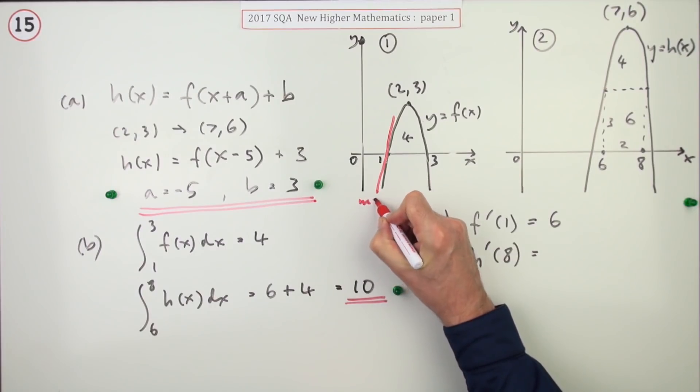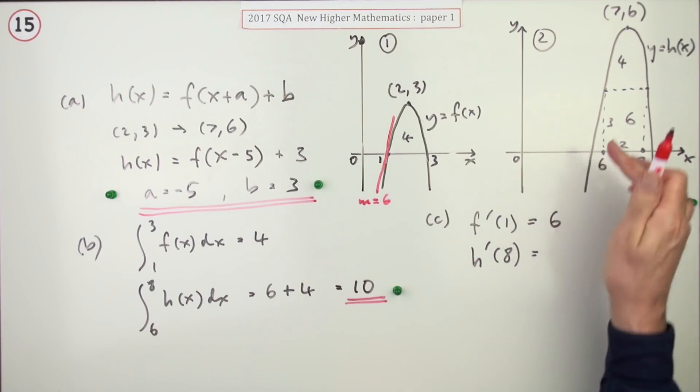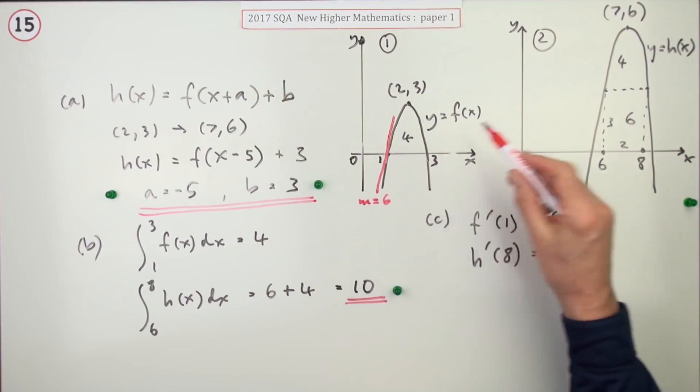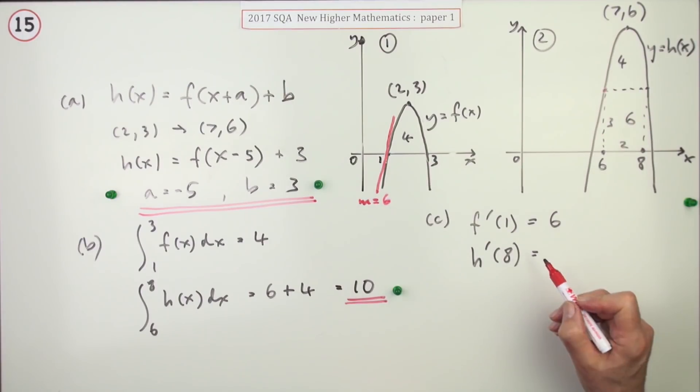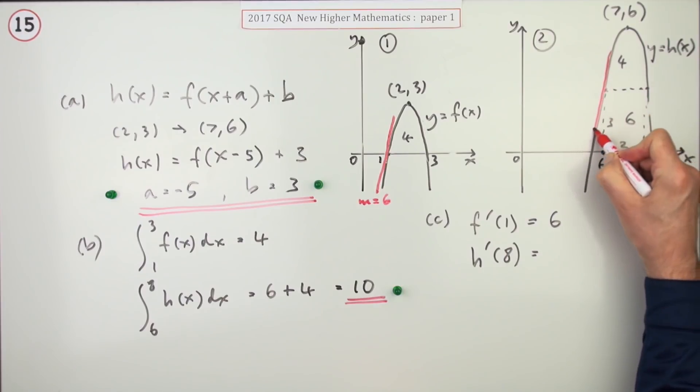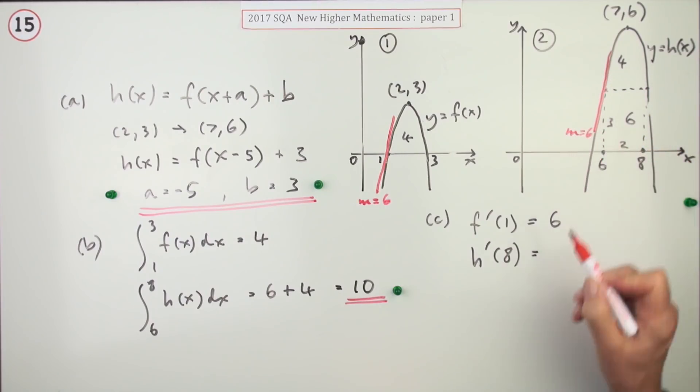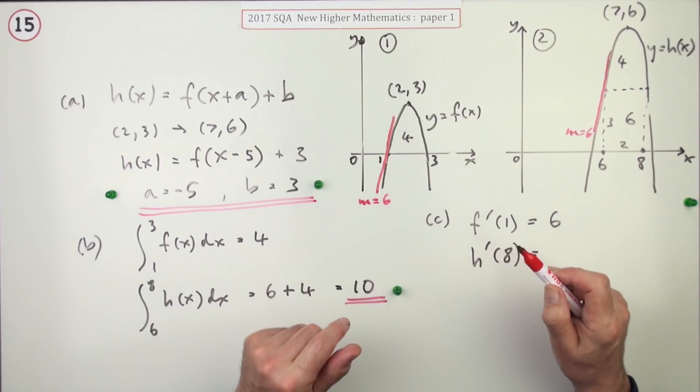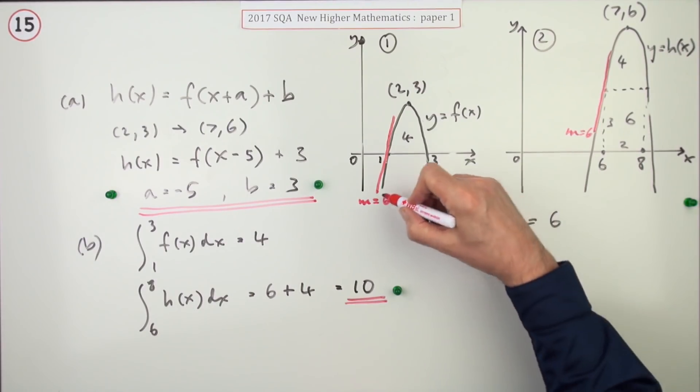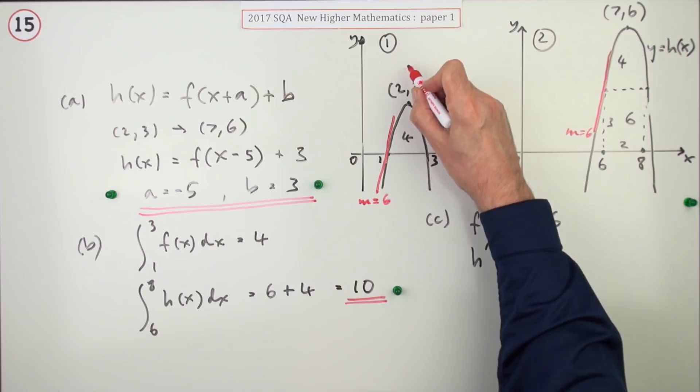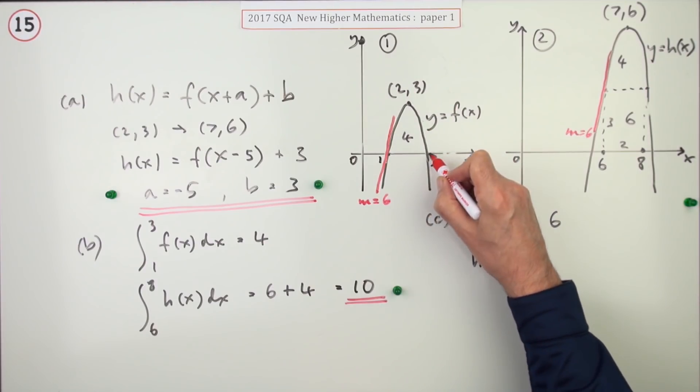Now, since that's been shifted, that corresponds to this gradient here. That's also a gradient of 6. Now, since it's a parabola, because it does say it's a quadratic function, you know that it's symmetrical. So about the axis of symmetry, this point here that's level with it, that must have a gradient of negative 6.